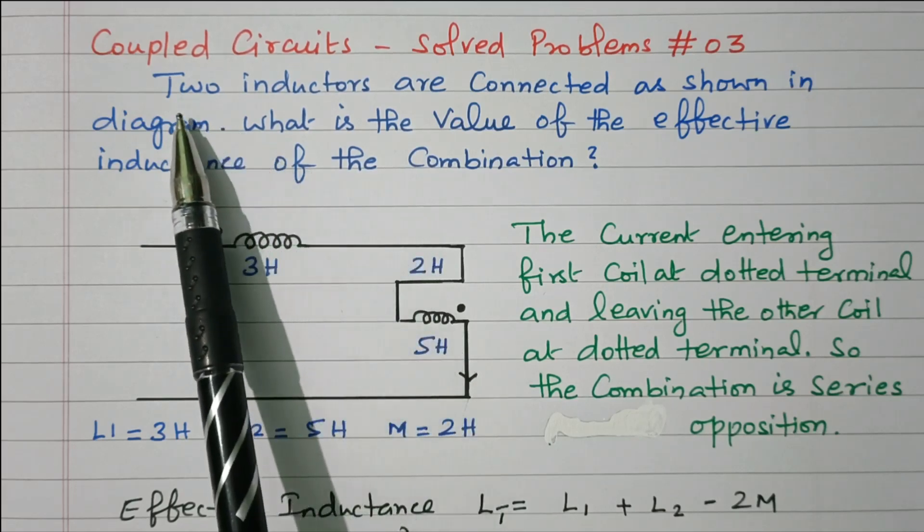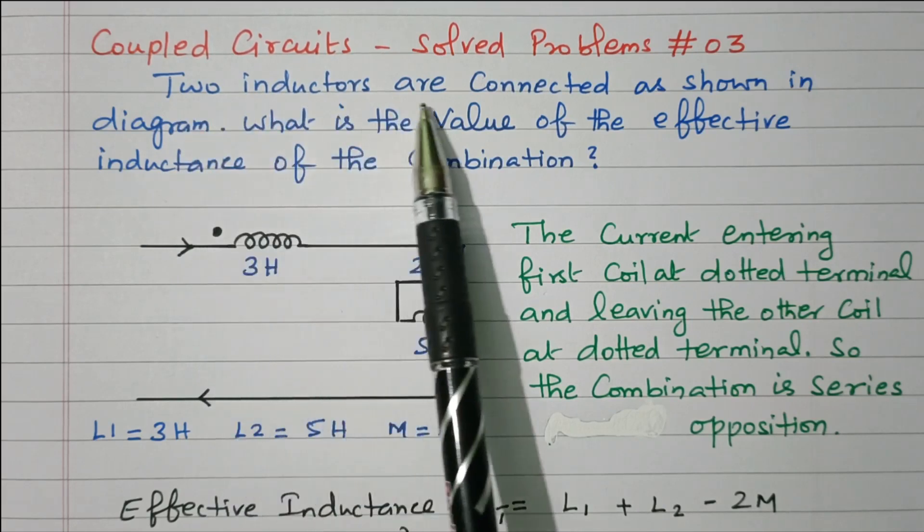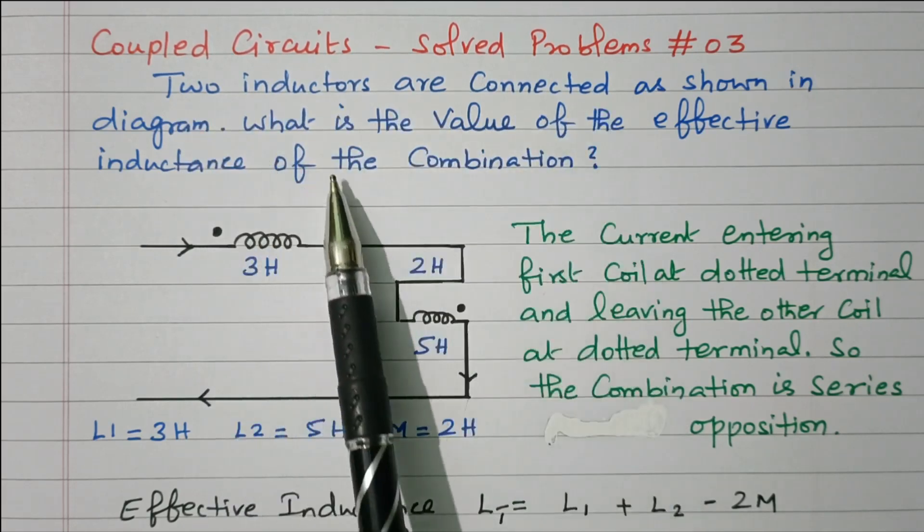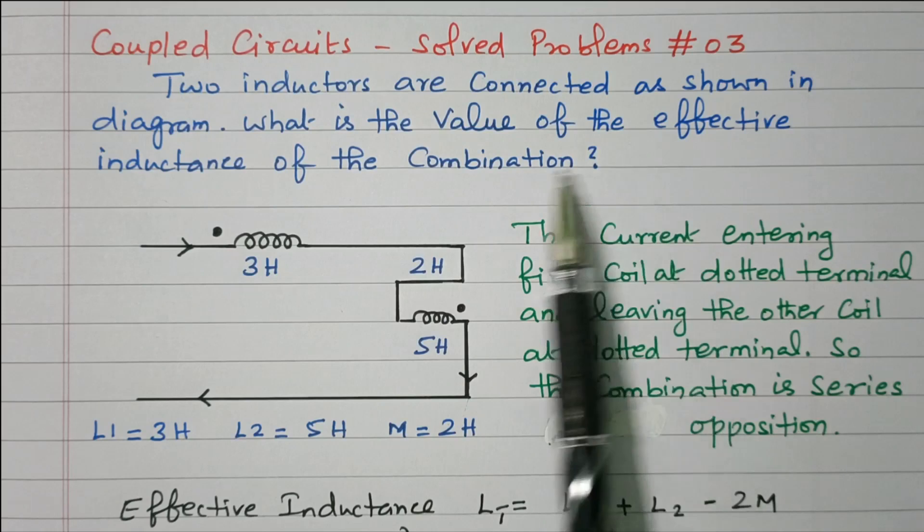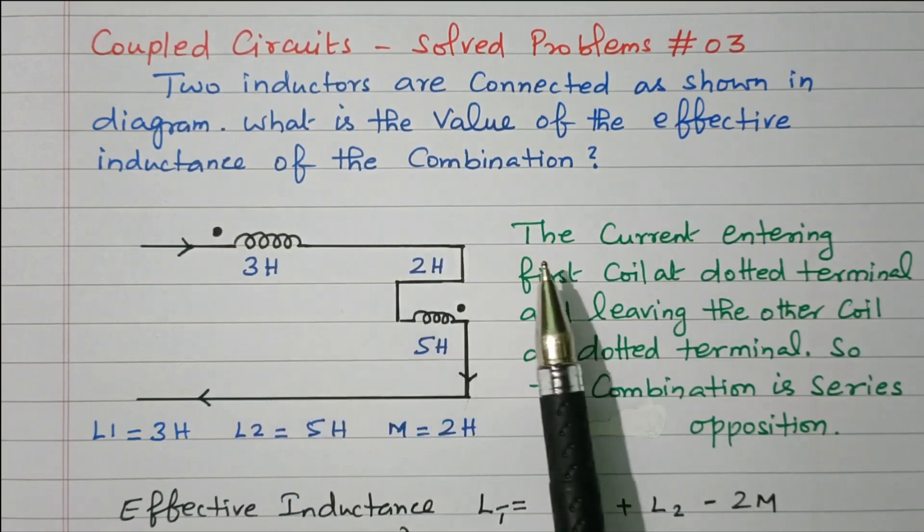Now we will go to the problem. The statement is: two inductors are connected as shown in the diagram. What is the value of effective inductance of the combination?